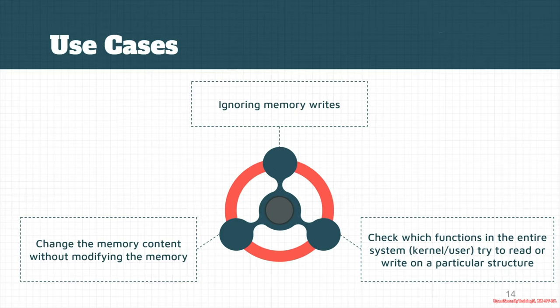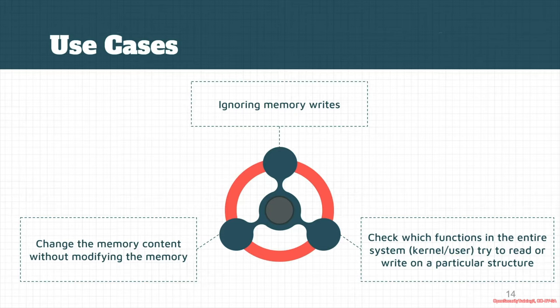Everything in HyperDbg is implemented at the EPT level — we modify kernel page-level routines to export these events. Some use cases for the monitor command include ignoring memory writes, reading something else from memory, or changing memory content without actually modifying it. Whenever the program tries to read that special address, you can show something else. This also applies to both user mode and kernel mode.